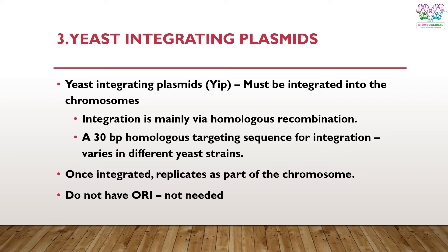The third type is yeast integrating plasmids. Yeast integrating plasmids are integrated into the chromosome. Integration involves homologous recombination, and a 30-base homologous targeting sequence is required for integration, which varies in different yeast strains. Once integrated, this plasmid replicates as a part of the chromosome. Because these plasmids do not have to replicate independently — they integrate into the chromosome — they do not have an origin of replication.